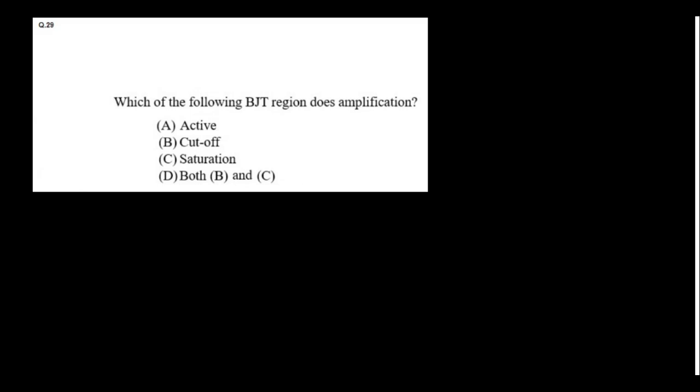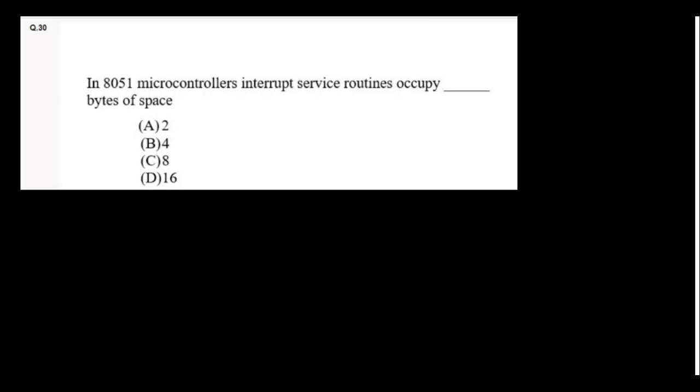Which of the following BJT region does amplification? It is not cut-off, not saturation, not B and C. So option A—active region—is the right answer. In 8051 microcontroller, interrupt service routine occupies 8 bytes of space. If the answer key is given as 8, actually I couldn't find what is the answer. I am taking it for granted this 8. Please check it yourself. Otherwise I will check and update, if you find any discrepancy.